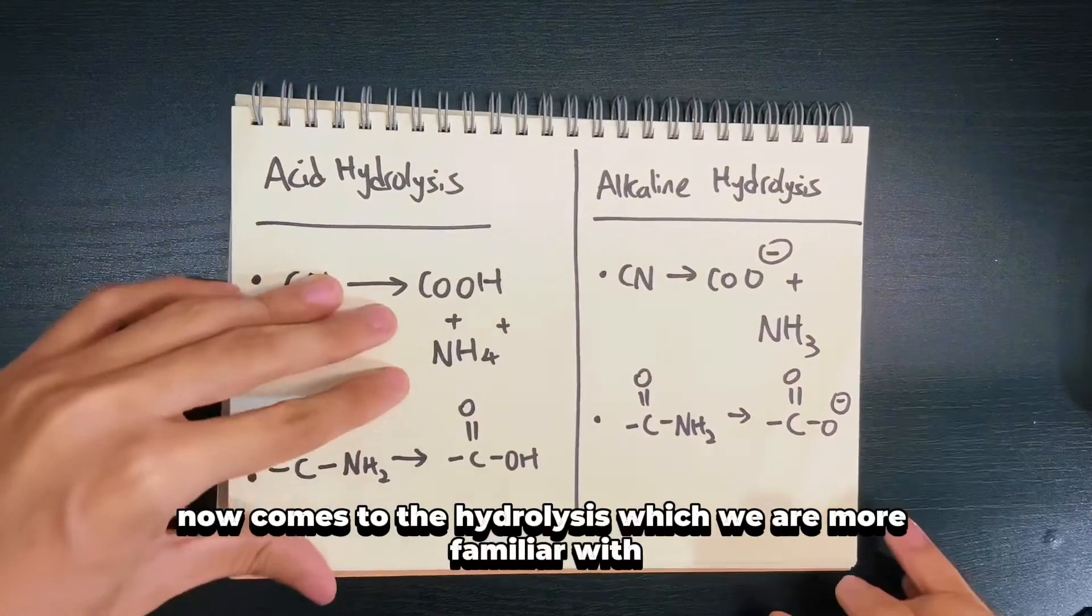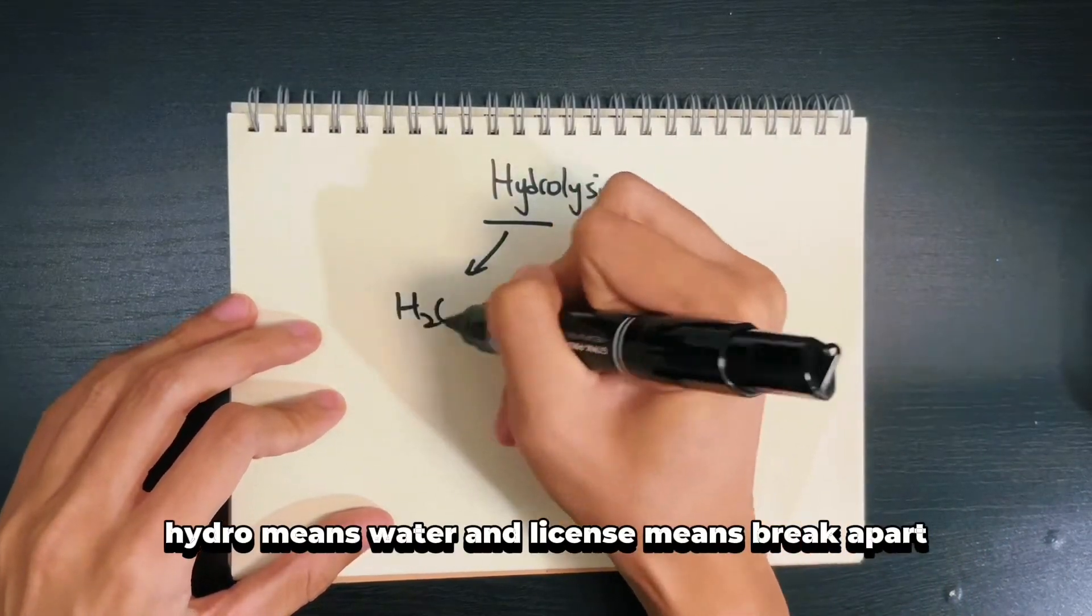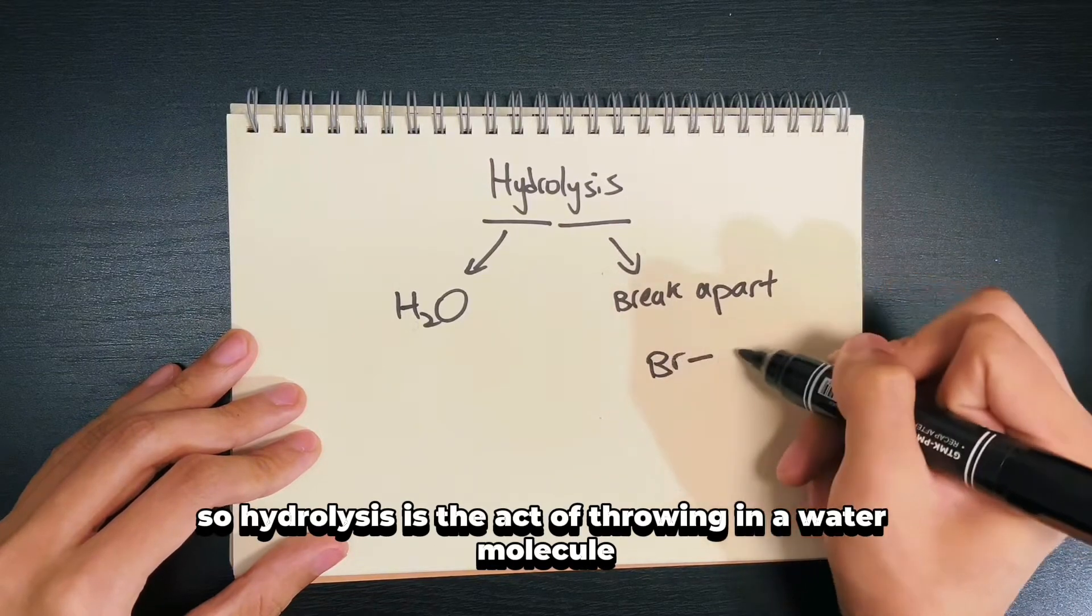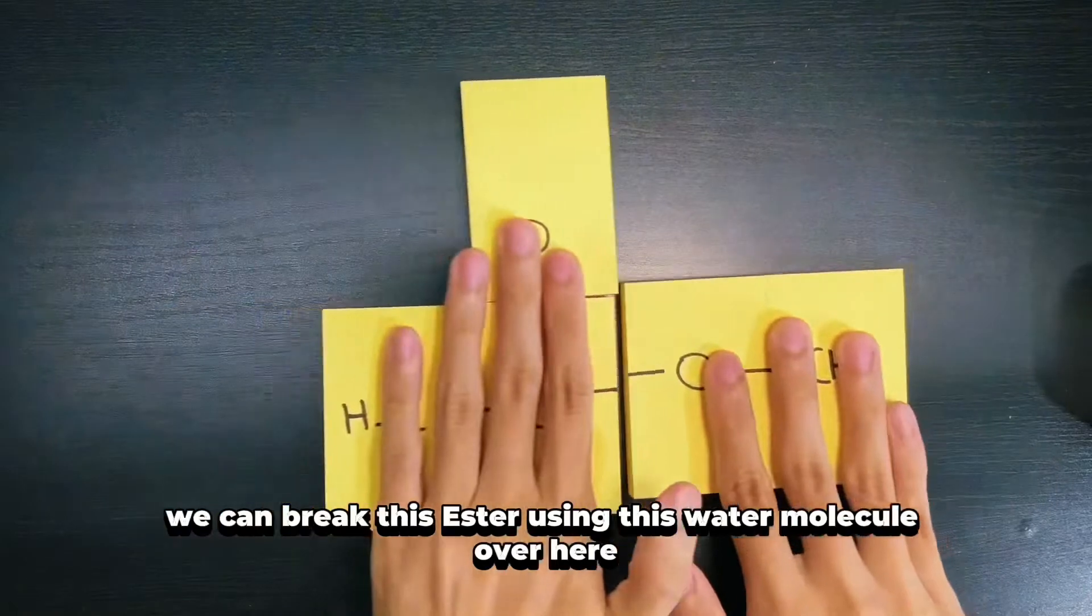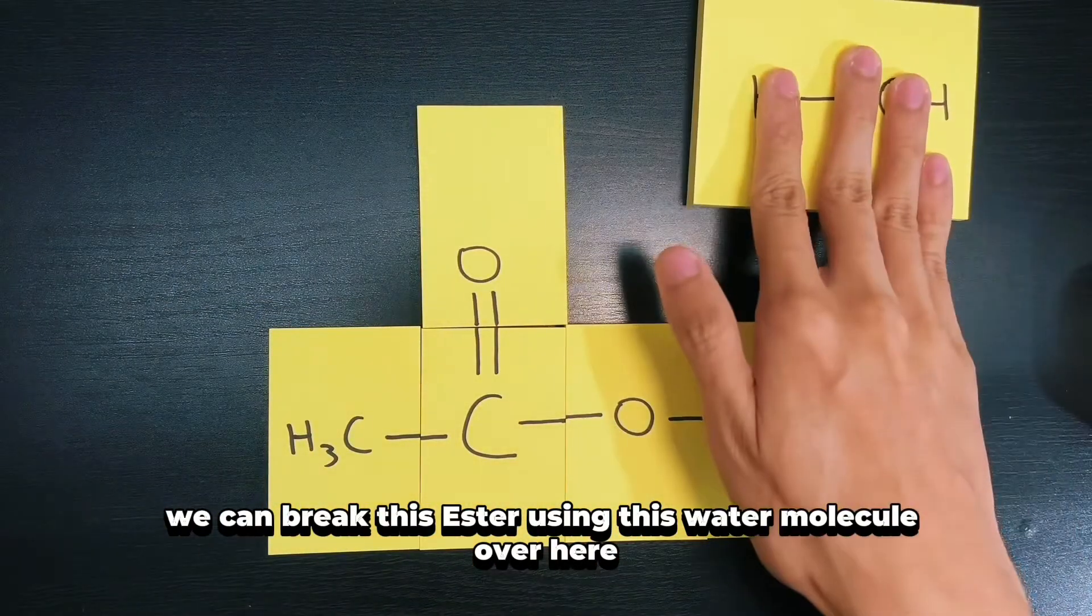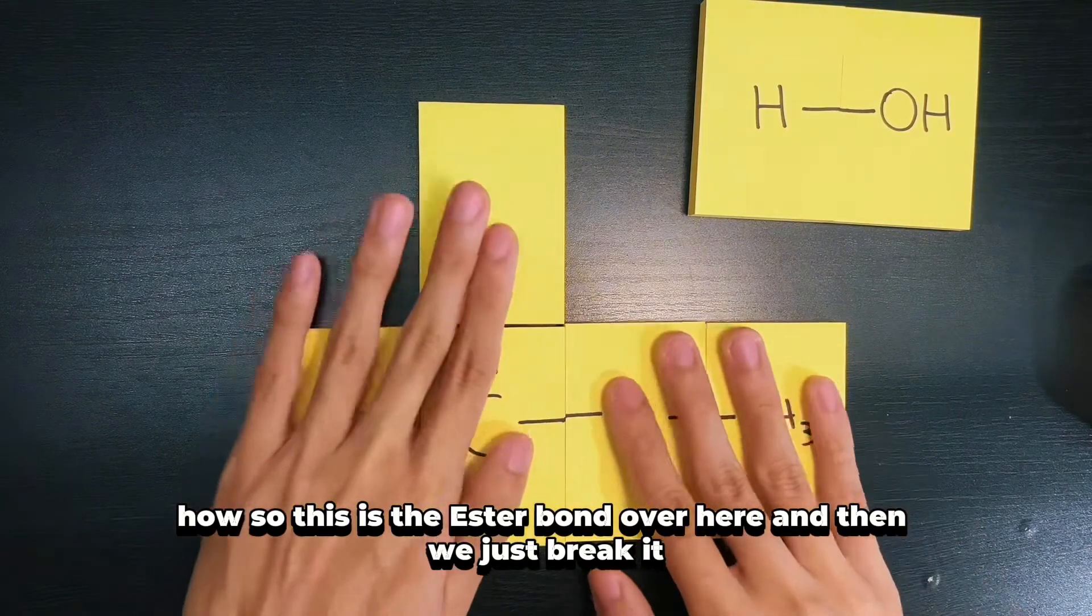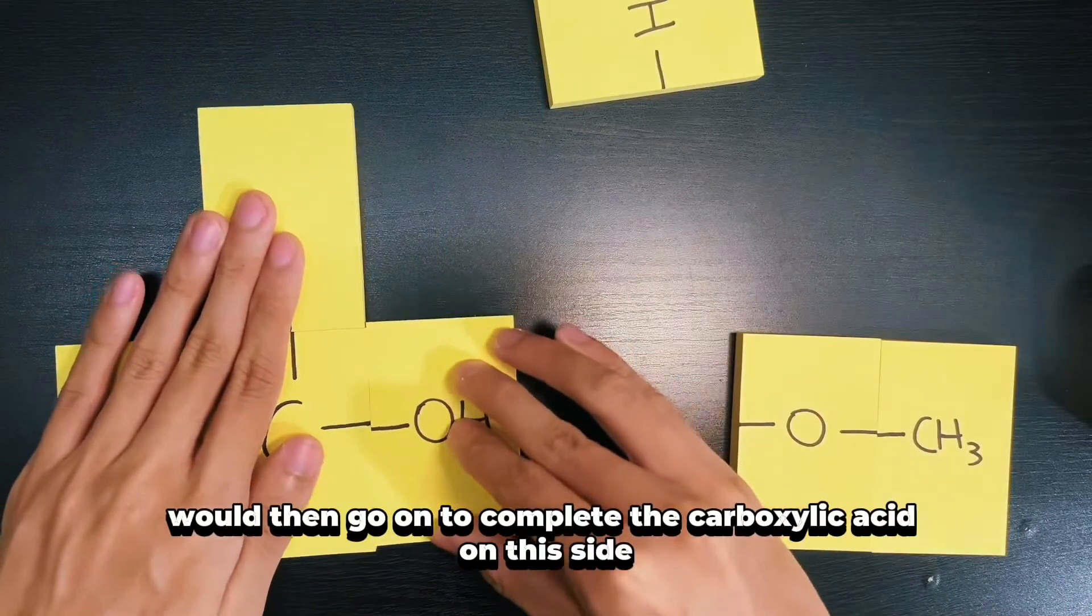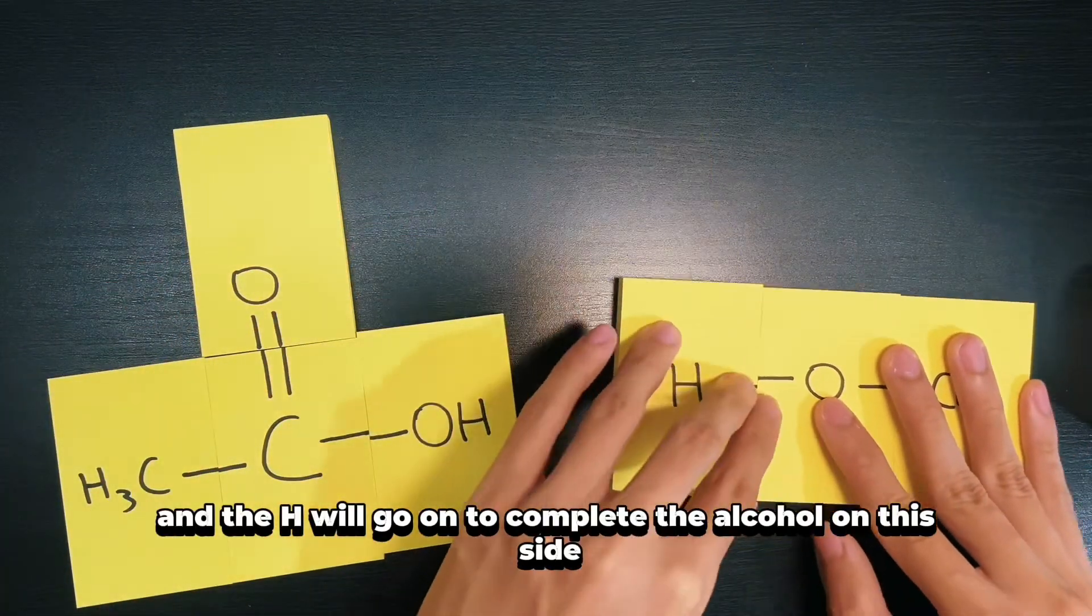Now comes to hydrolysis, which we are more familiar with. Hydro means water and lysis means break apart. So hydrolysis is the act of throwing in a water molecule to break something apart. We can break this ester using this water molecule. This is the ester bond over here, and then we just break it. The OH here would then go on to complete the carboxylic acid on this side and the H will go on to complete the alcohol on this side.